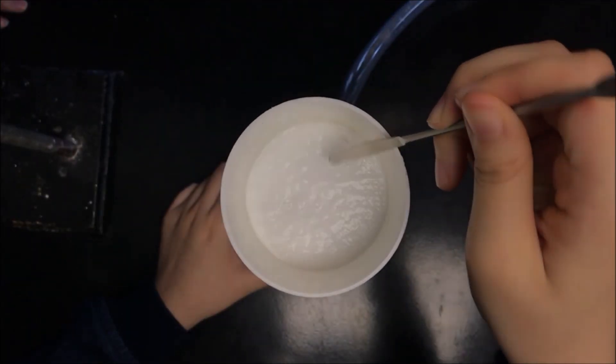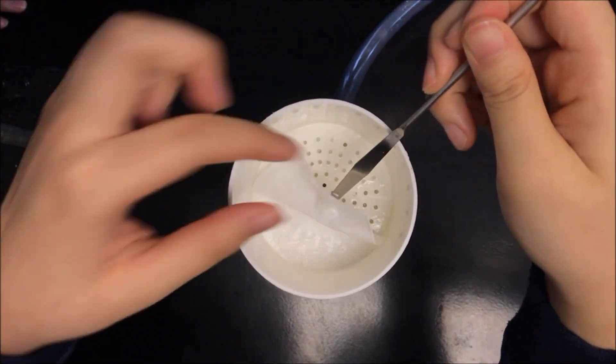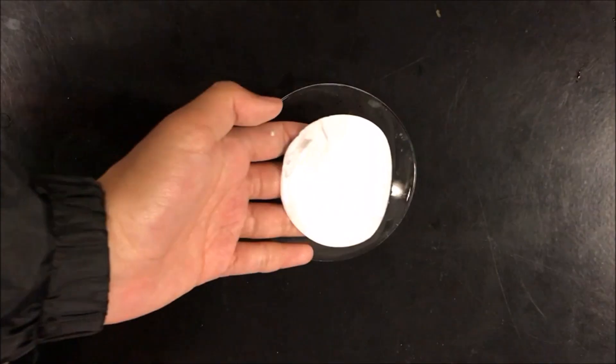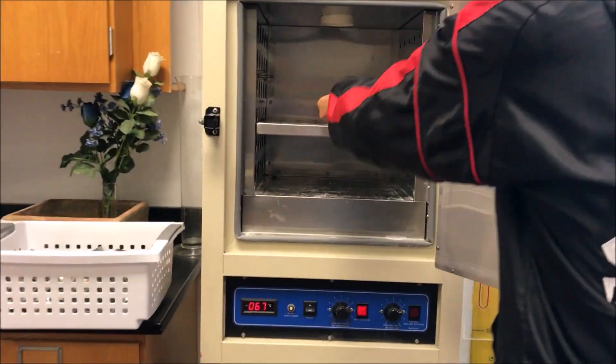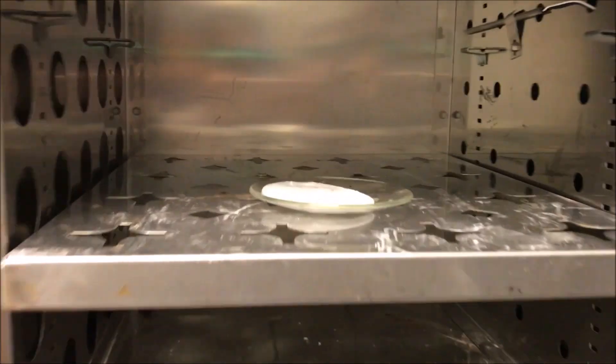Using a spatula, lift the filter paper out of the funnel. Place it onto a watch glass. Dry the paper in an oven for about 10 minutes. Start your second trial.